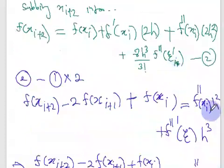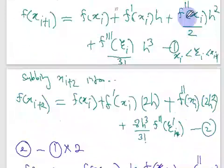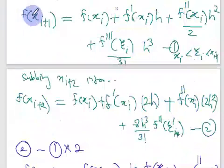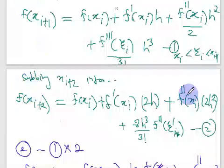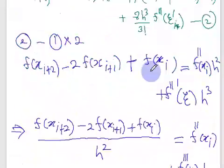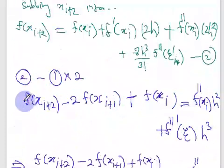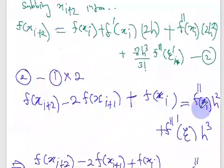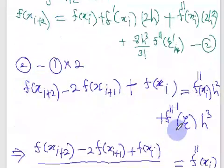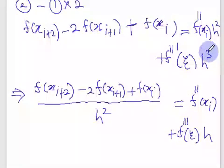To isolate f-double-prime, we need to eliminate the first derivative terms from the two equations. We multiply the first equation by negative 2 and add the equations together. This gives: f(xi plus 2) minus 2 times f(xi plus 1) plus f(xi) equals f-double-prime(xi) times h squared, plus the error term.